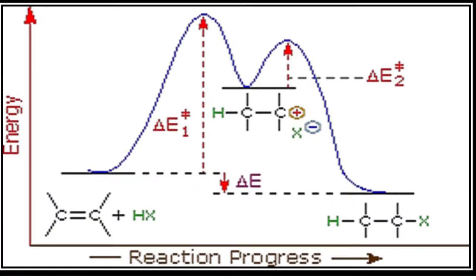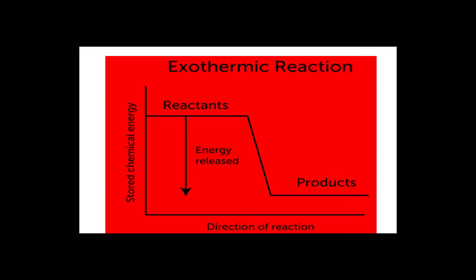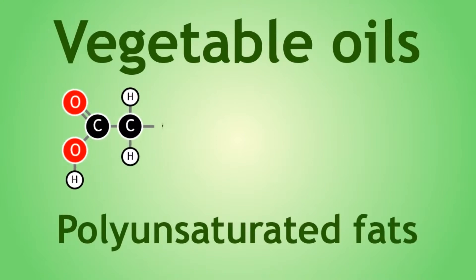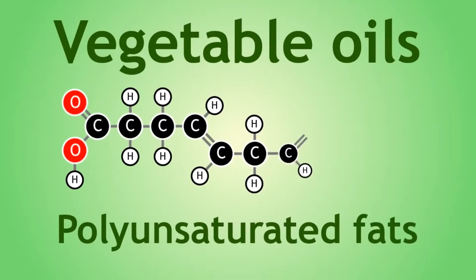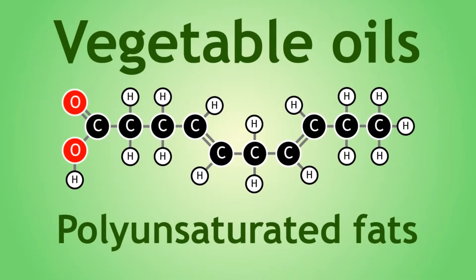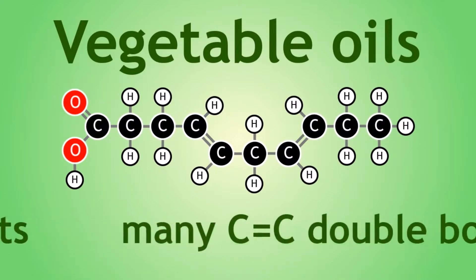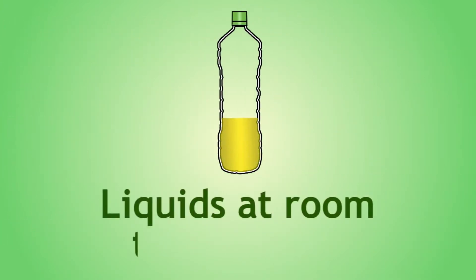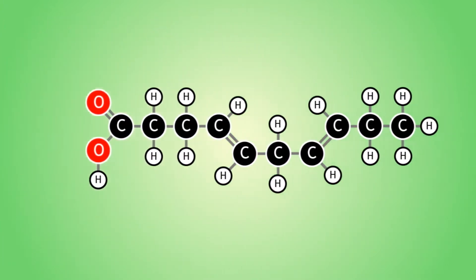Carbon-nitrogen multiple bonds as in imine compounds also undergo addition reactions. Addition reaction is the reverse of the elimination reaction. Addition reactions are typically exothermic, where the bond energies of the product molecules are greater than the bond energies of the reactants. One of the industrial significances of addition reaction is the hydrogenation of vegetable oil, where unsaturated hydrocarbons are converted to saturated fats called margarine.